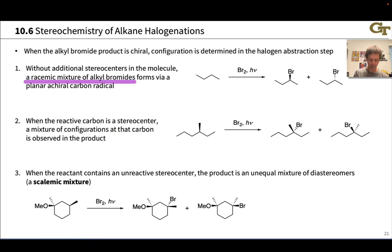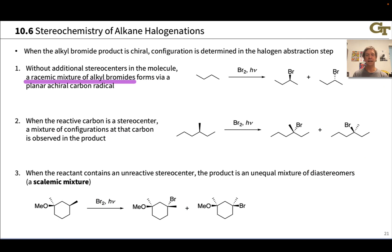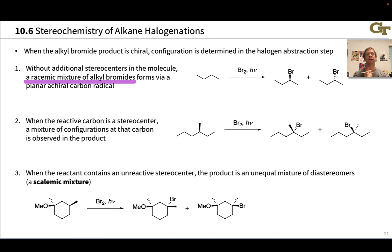For example, these two alkyl bromides are enantiomers of each other and are going to be generated in equal amounts — a racemic mixture. This reaction goes via a planar achiral carbon radical. That planar radical can be approached by Br2 from above or below, and that will happen to equal degrees, giving a racemic mixture of the two enantiomers.